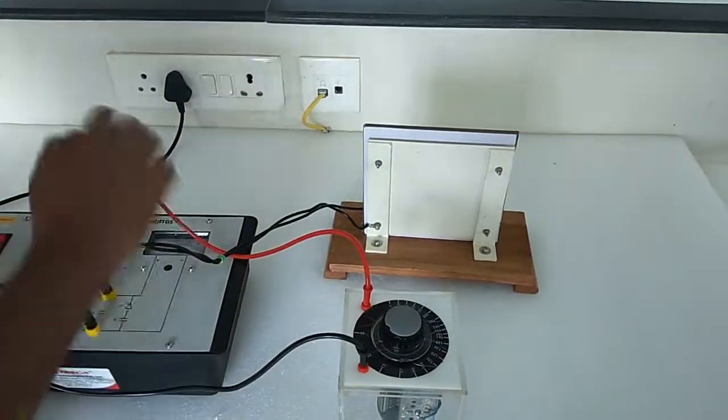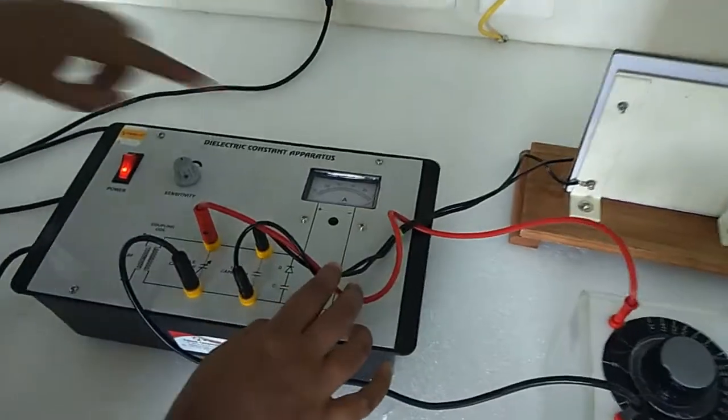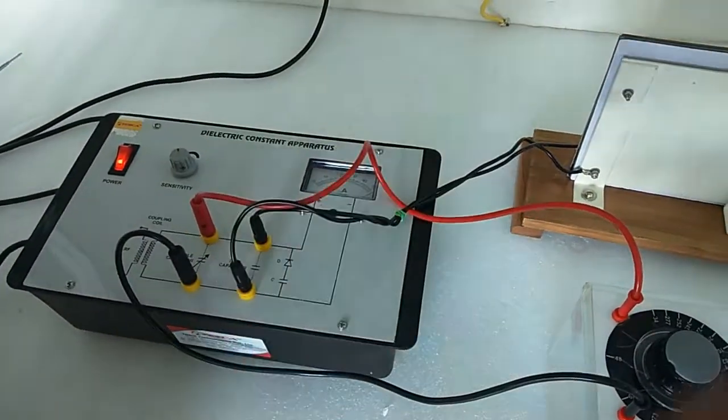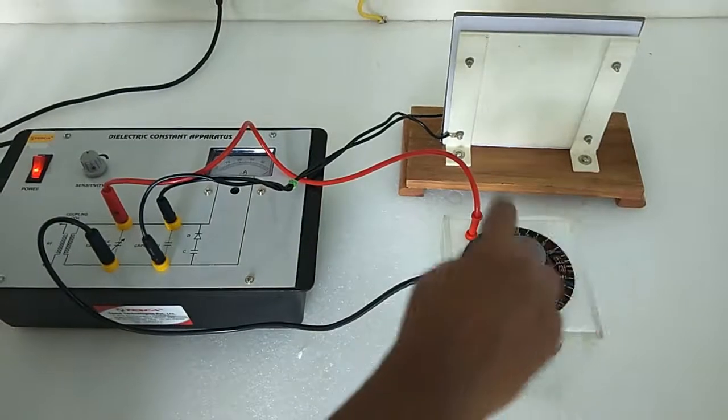As we have inserted it, we can see there is deflection in the micro ammeter. Now slowly move this towards the minimum value and note the deflection.